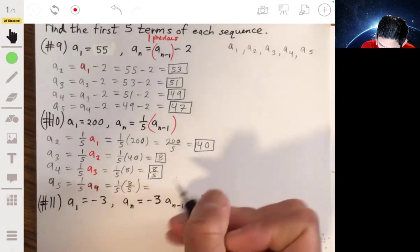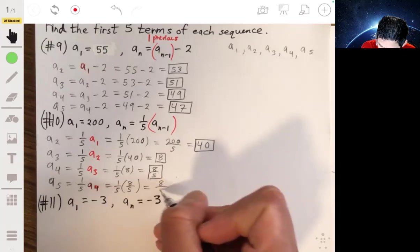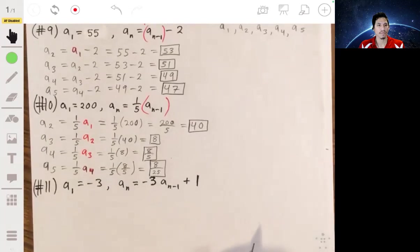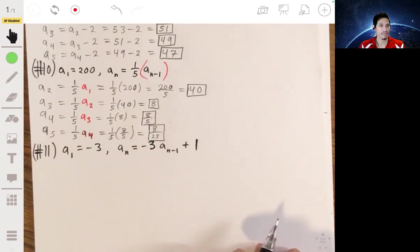And a5 is 1/5 times a4, which would then just be 8/25.